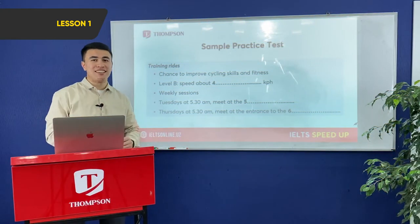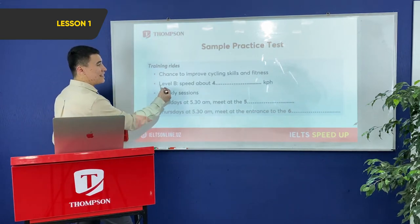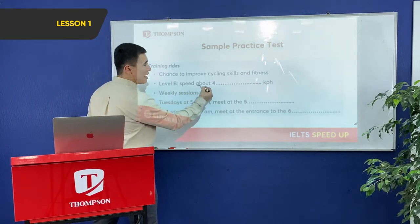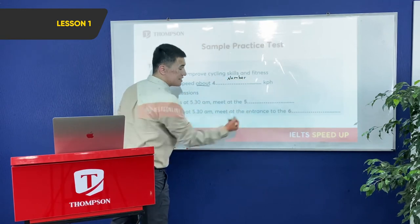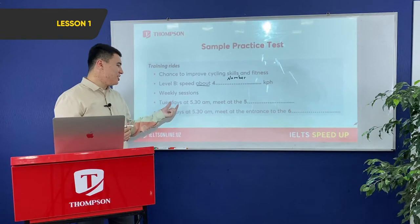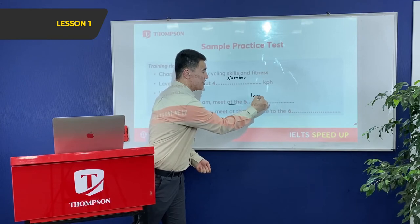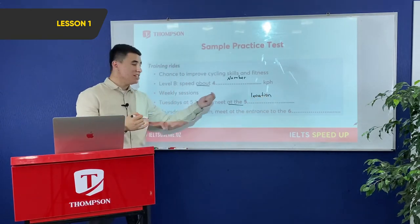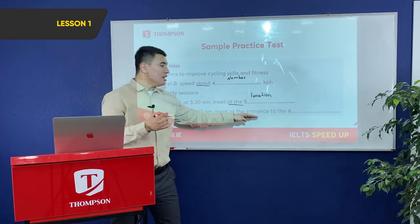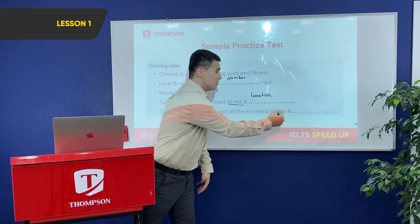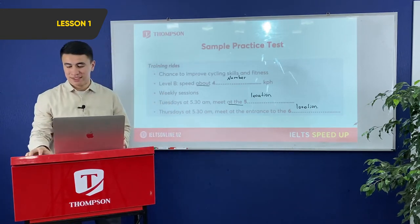Let's move to the second half of the note. Level B speed is about a certain number of kilometers per hour. For Tuesdays at 5:30, you need to write the meeting location. For Thursday, the meeting location is the entrance to somewhere. Let's listen.